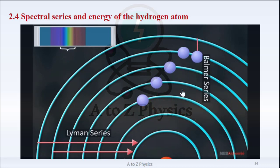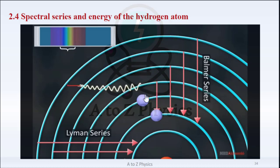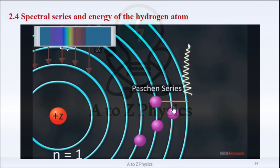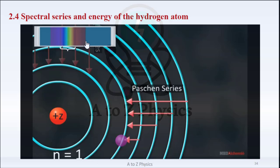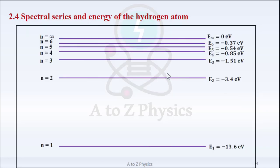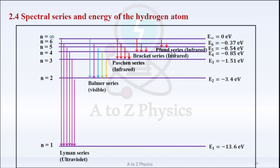When a transition from higher excited states to the first excited state, N = 2, occurs in the atom, the Balmer series is obtained. The wavelengths of the first four lines lie in the visible region. When a transition to the second excited state, N = 3, occurs, the Paschen series is obtained, with wavelengths in the infrared region. This diagram shows the five series of the hydrogen atom: Lyman, Balmer, Paschen, Brackett, and Pfund series.